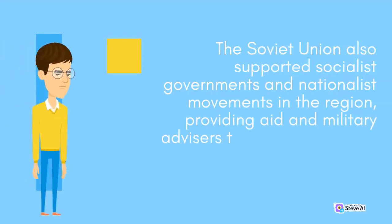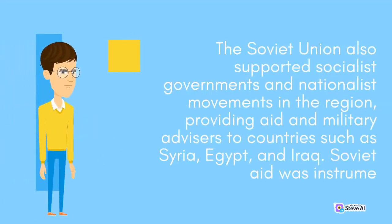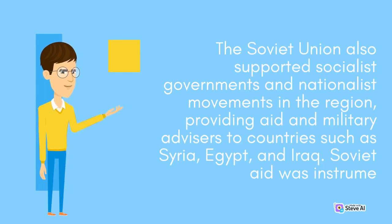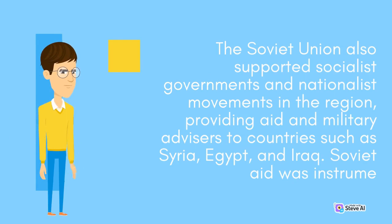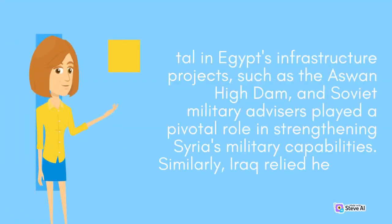The Soviet Union also supported socialist governments and nationalist movements in the region, providing aid and military advisers to countries such as Syria, Egypt, and Iraq. Soviet aid was instrumental in Egypt's infrastructure projects such as the Aswan High Dam, and Soviet military advisers played a pivotal role in strengthening Syria's military capabilities.